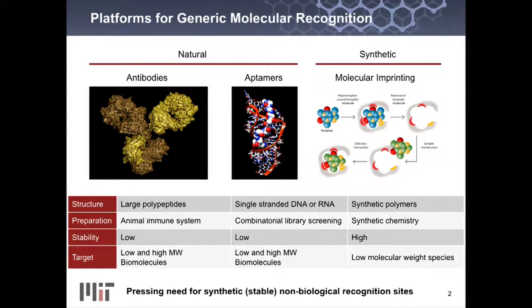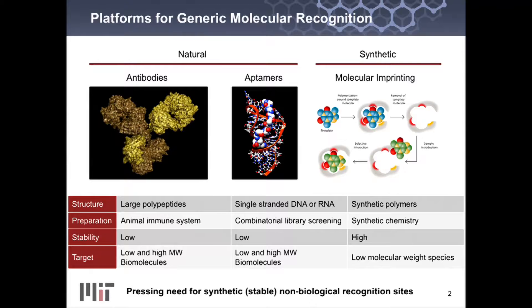Nanotechnology is producing transducers that can get down to single molecule — we have sensor transducers that can basically count single molecules at room temperature in the environment. The question is how do we make them selective? In the clinic and hospital, most assays used to diagnose you come from nature. The workforce for molecular recognition comes from antibodies and, to a lesser extent, aptamers. Nature makes these molecules to be transient — your body makes antibodies designed to be broken down. There is a pressing need for synthetic, stable, non-biological molecular recognition sites. That's the missing need in the sensor space.